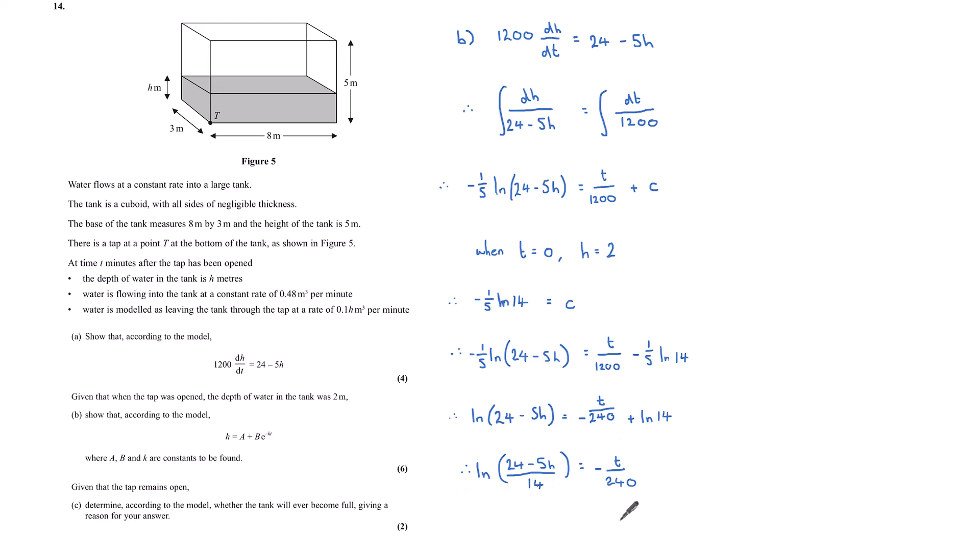I can now take exponentials of both sides. 24 minus 5h over 14, because the exponential with the natural log will cancel, is equal to e to the power minus t over 240. We're getting to be in the form that we require. Let's multiply both sides by 14. Just tidying it up a little bit more. Now, to isolate the h, if we add 5h to both sides, subtract the 14e minus t over 240, and then divide by 5, we've got that our height is equal to 24 fifths minus 14 fifths e to the minus t over 240, where we have our constants a, b, and k.